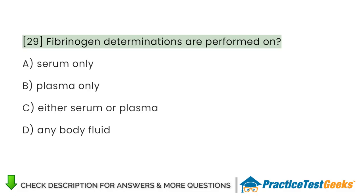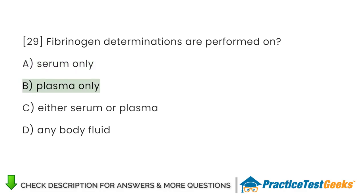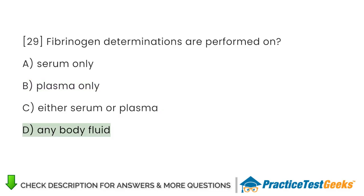Fibrinogen determinations are performed on: A. Serum only. B. Plasma only. C. Either serum or plasma. D. Any body fluid.